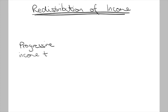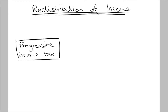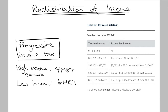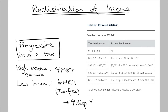Australia's progressive tax system lessens income inequality as it charges a higher marginal tax rate on higher income earners. Lower income households get charged a lower marginal tax rate. In fact, those earning below $18,200 fall under the tax-free threshold, meaning that they don't even have to pay any tax. This leaves lower income households with more disposable income after tax.